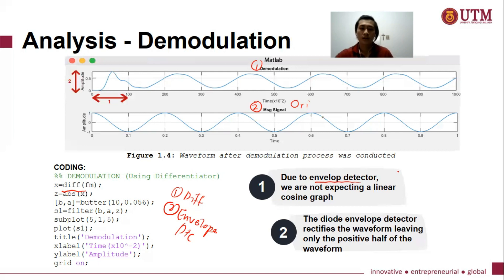And in the discriminator method, I want you to imagine we are having a circuit with diode and also a low pass filter, which is the capacitor itself. So in the circuit, after the waveform is going through the circuit, we are not expecting a linear cosine graph, but some distortion will happen onto the detected audio signal.